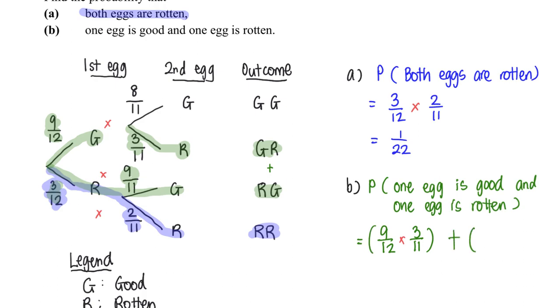Plus 3 over 12 multiply by 9 over 11 to give me a final answer of 9 over 22.